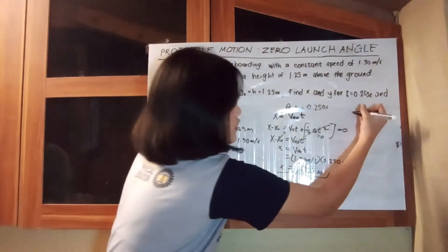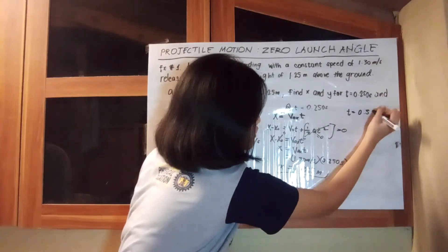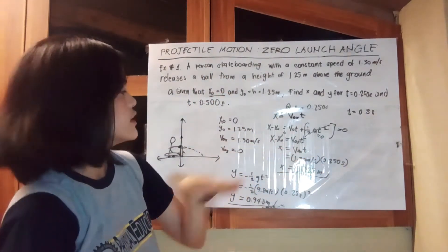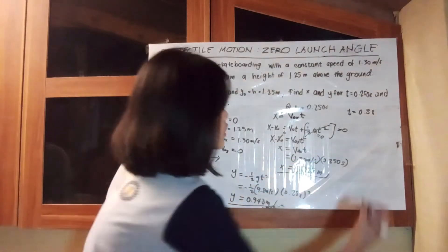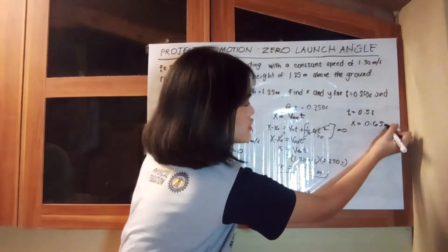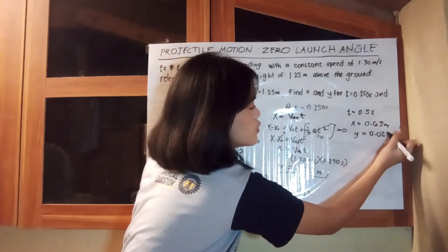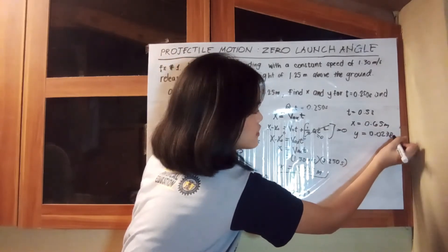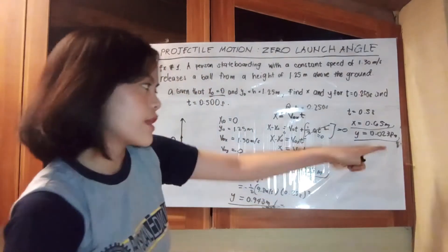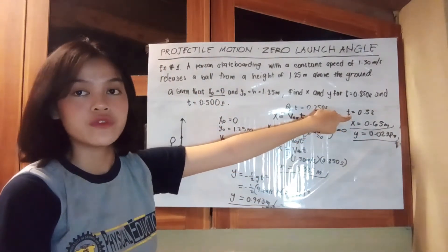When time is equivalent to 0.500 seconds, using the same formulas and process, x equals 0.65 meters and y equals negative 1.23 meters. Those are our x and y components when time is equivalent to 0.500 seconds.